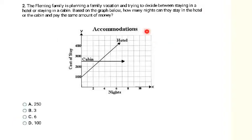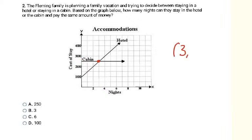This next problem is still a graphing one, only it has a word problem associated with it. The Fleming family is planning a family vacation and trying to decide between staying in a hotel or a cabin. Based on the graph, how many nights can they stay in the hotel or the cabin and pay the same amount? The answer is where the two lines cross — the intersection has an x-coordinate of 3 and a y-coordinate of 250.